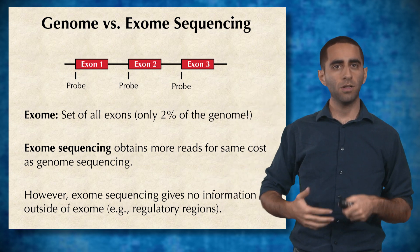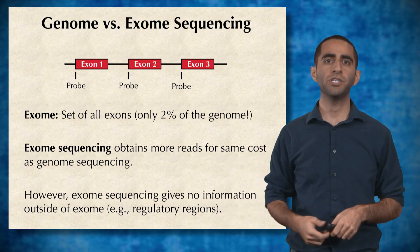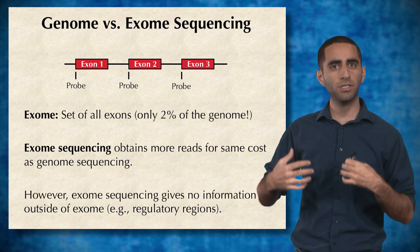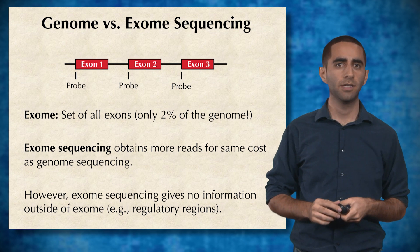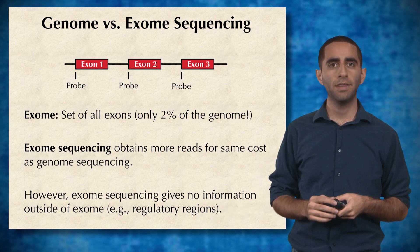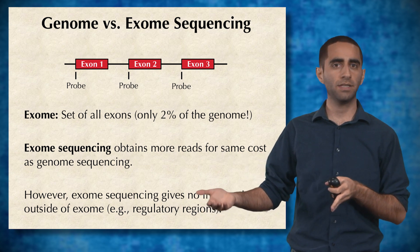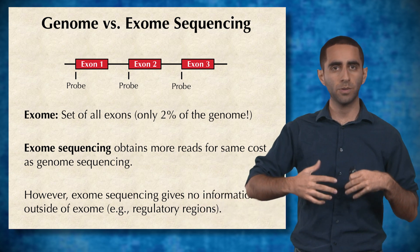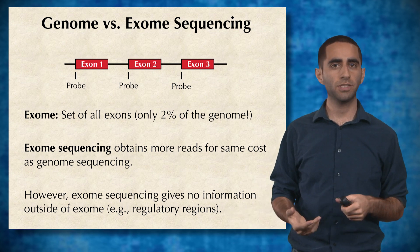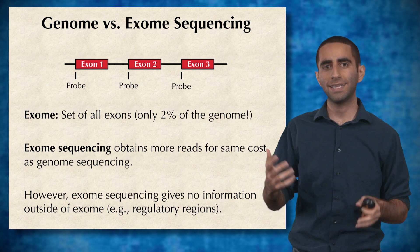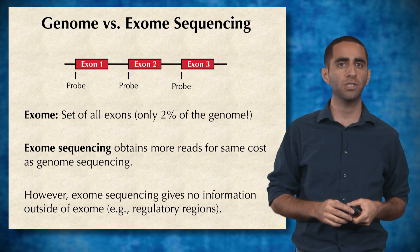A lot of interesting variants, such as the one in cystic fibrosis, occur in protein-coding regions. So if we knew beforehand that we're specifically looking for a variant that affects a protein's sequence, we can instead sequence only the exome, which consists of just two percent of the whole genome. This allows us to sequence at a much deeper coverage for the exact same price, getting more reads at the same cost as genome sequencing because we're only looking at these targeted positions.